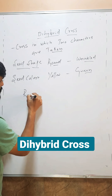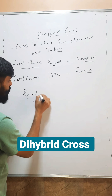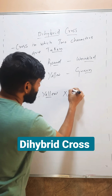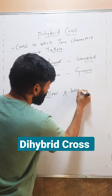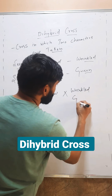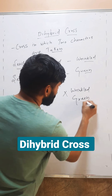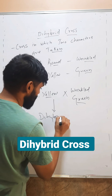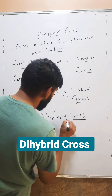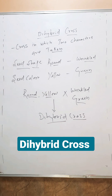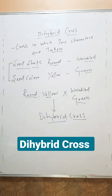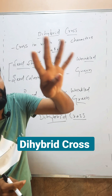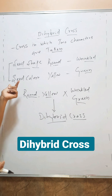So when I will cross between round yellow and wrinkled green, then this cross will be called a dihybrid cross. Because there are two characters and each character has two traits, so there will be a total of four traits and two characters.